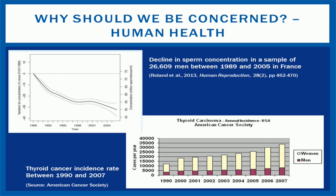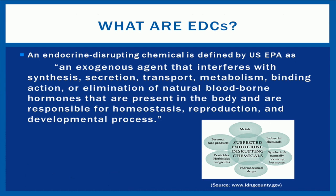The concern is that chemicals able to interfere with the normal functioning of hormones — that is, endocrine-disrupting chemicals, or EDCs — may play a role in these conditions. An EDC is defined by the US EPA as an exogenous agent that interferes with synthesis, secretion, transport, metabolism, binding action, or elimination of natural blood-borne hormones that are present in the body and are responsible for homeostasis, reproduction, and developmental processes. In short, an EDC is a chemical which interferes with our endocrine system, thereby disrupting bodily functions in some way.